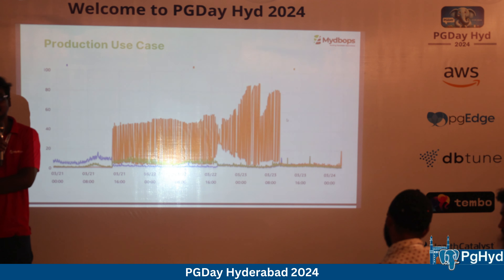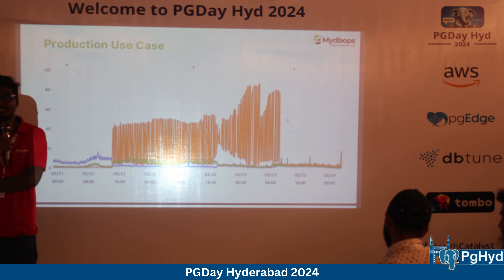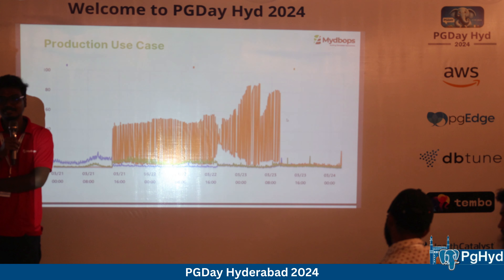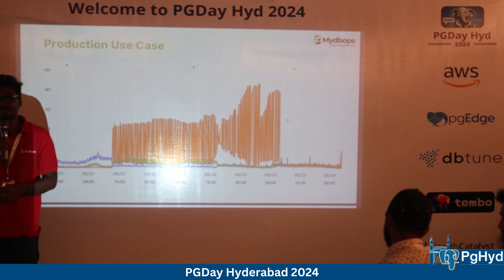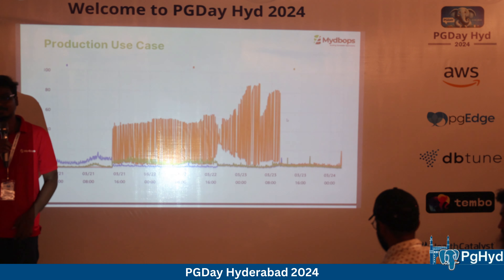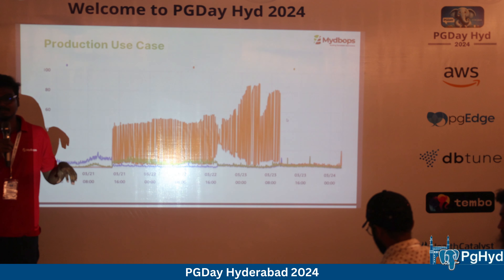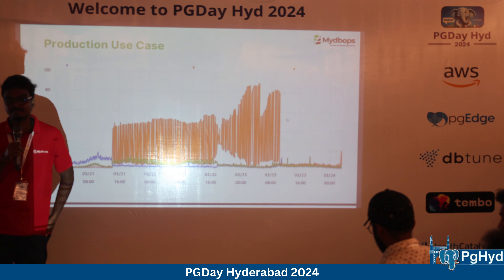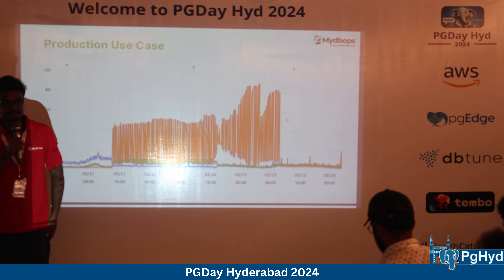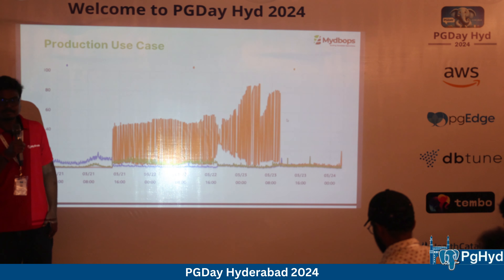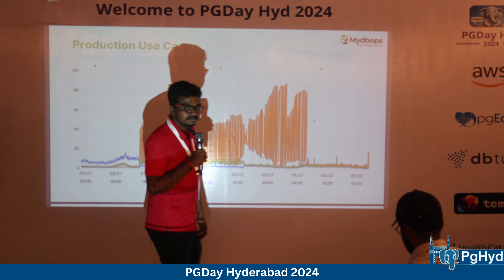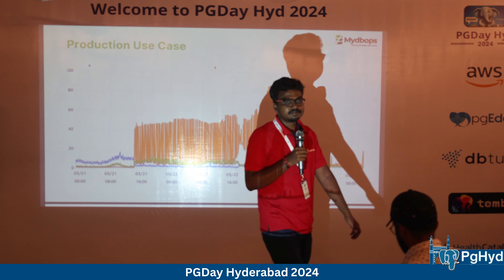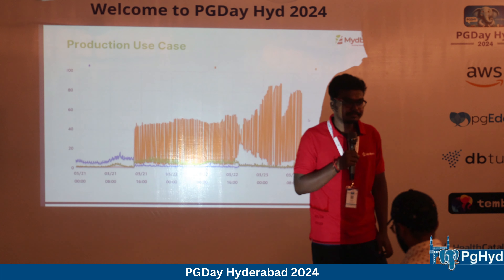We updated the DNS and pointed all applications to connect through PG Bouncer. Immediately we could see the CPU return to normal levels. Along with this, we performed some performance tuning, and ultimately were able to downsize the instance.